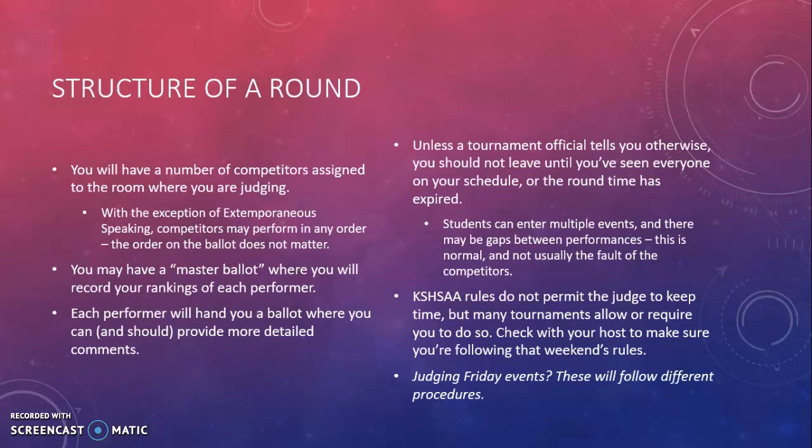A round in forensics is a sequence of performers that you will see in some order. There will be a number of competitors assigned to your room — usually that number is between five and eight, but some tournaments may vary slightly. If you are judging extemporaneous speaking, you can expect that students will perform in the order listed on their ballot. However, in other events, students might perform in a different order than what you have on your ballot or schedule. Many tournaments will give you a master ballot where you would record your rankings of each performer. You will be ranking your performances from one to however many are in the room, and those rankings may not be duplicated — one student will earn the one, one student will earn the two, and so on.